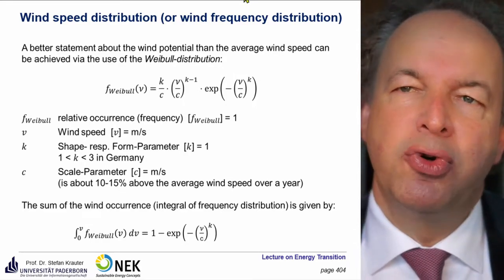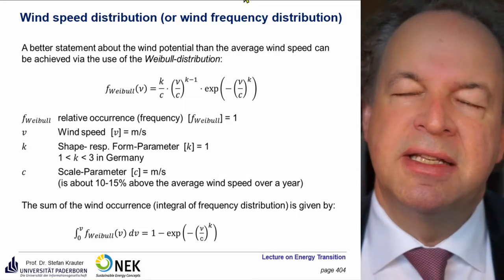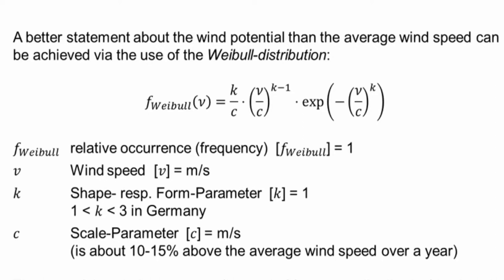Let's talk about the wind speed distribution or wind frequency distribution. If you take a look at the actual occurrences of wind speeds, you come to a so-called Weibull distribution, given by the formula: k divided by c, then wind speed v divided by c, raised to k minus 1. C is the scale parameter with units meters per second, which is roughly 10 to 15% above the average annual wind speed. K is the shape or form factor, which is in the vicinity of 1 to 3 in Germany — typically 2 in good conditions, 1 in less good conditions; 3 never occurs in Germany, only in very wind-rich countries. There is no unit for k. That is multiplied by the exponential function with the exponent minus (v divided by c) to the power of k.